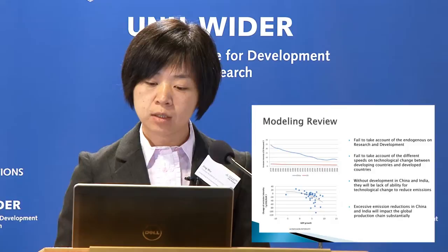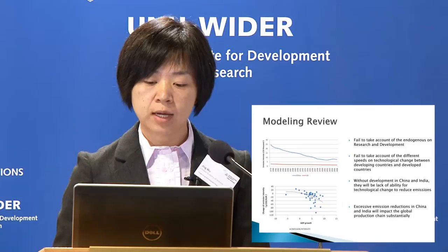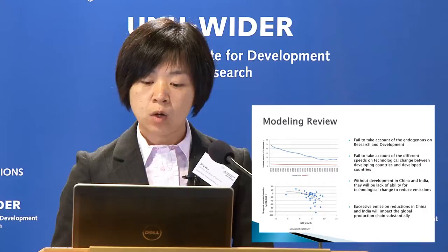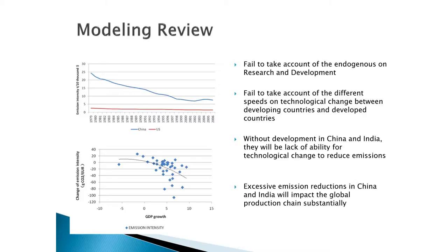The technological change issue is not only about technologies — it's also about development in developing countries. Without development in developing countries, for example China and India, there will be a lack of ability for technological change to reduce emissions. Also, excessive emission reductions in China and India will impact global production substantially.